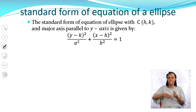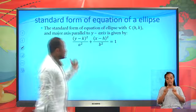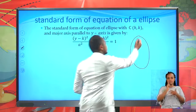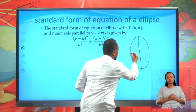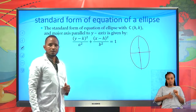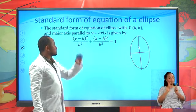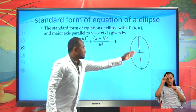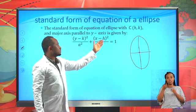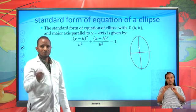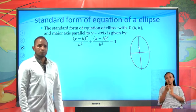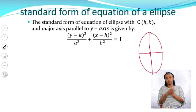The standard equation of ellipse with center (h, k) and major axis parallel to the y-axis is: (y − k)² / a² + (x − h)² / b² = 1. When the major axis is horizontal it starts from x; when vertical, it starts from y. Now let's see an example.